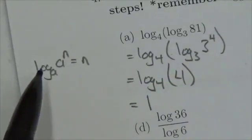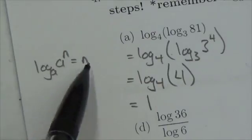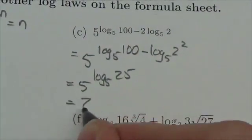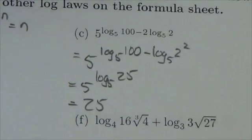The rule is that a to the log base a of n equals n, so I could write this simply as 25, and that works.